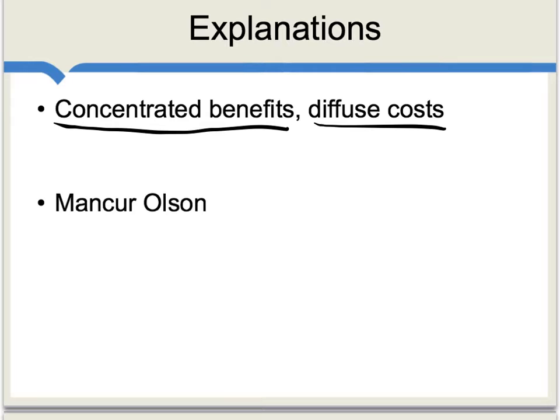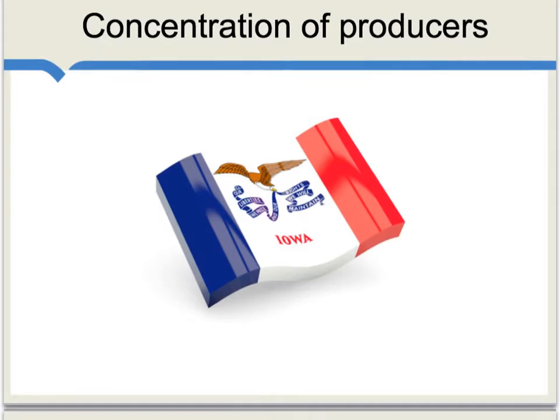Tariffs therefore tend to favor relatively small and relatively well-organized groups, as pointed out by economist Mancur Olson. A related factor is the geographic concentration of producers, especially in a federalist system. In the United States, for instance, a large number of farmers live in Iowa, and the congressmen from Iowa — the representatives and senators — when working in Washington, tend to represent those farm interests and push for farm protectionism and subsidies. This political force would probably be weaker if farmers were spread evenly across the entire country.